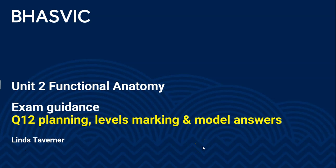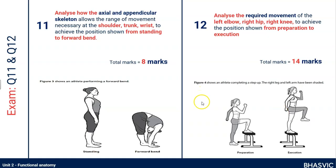This video is for Functional Anatomy and we are looking at how to approach question 12s, how to go about planning the content that's in question 12, how it's marked, and to give you an example of a couple of model answers. Question 11 involves looking at a particular movement, generally from one position to another — a single movement — and using only analysis of the skeletal system to provide information on three specified joints. In this case it's from standing to a forward bend, analysing the shoulder and the wrist, worth 8 marks.